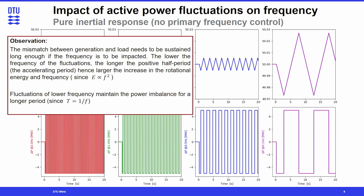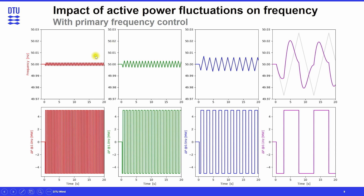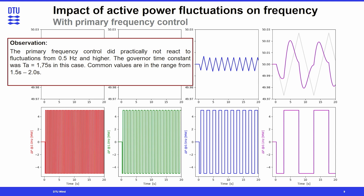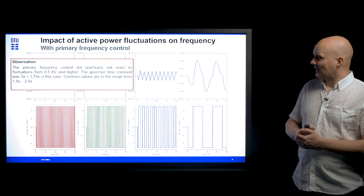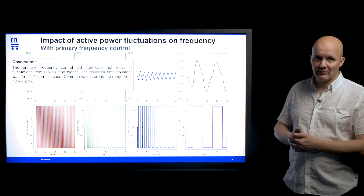This was a case where we had disabled the frequency control — so this is just the pure inertial response of the system. In the next example, we have active frequency control enabled. The previous results are plotted in grey in the background, and we can see that for the three first cases we are practically getting the same results as before. While in the last case with 0.1 Hz fluctuation, we can see that the effect of frequency control begins to kick in and we get deviations from the previous results. The general observation is that primary frequency control does practically not react to fluctuations of 0.5 Hz and upwards. One of the reasons for that, besides the inertia of the system, is that the governor time constant used here was 1.75 seconds, and common values for governor time constants are in the range from 1.5 to 2 seconds.